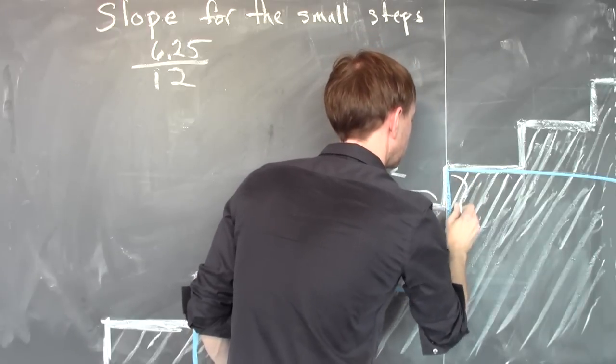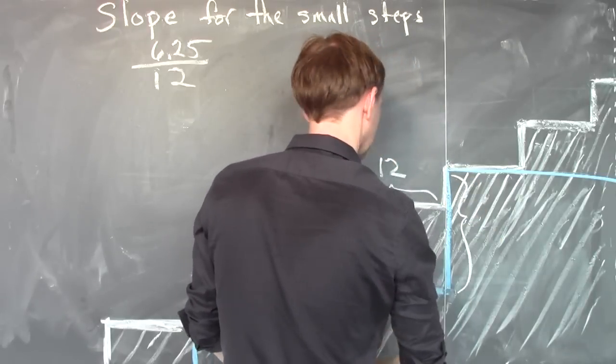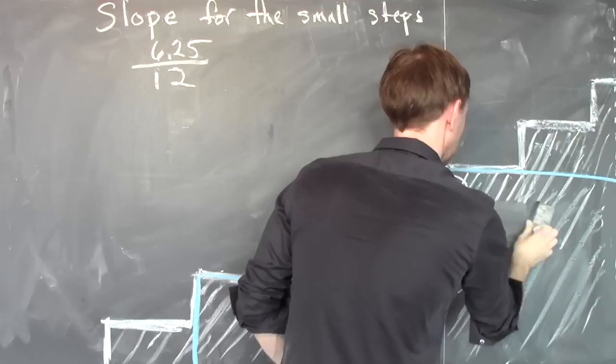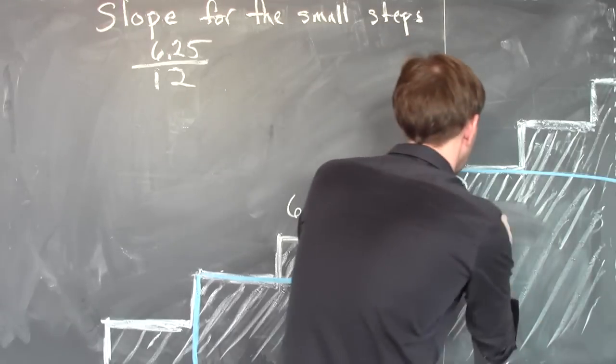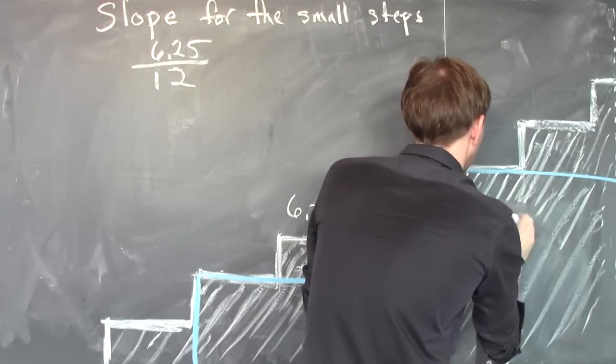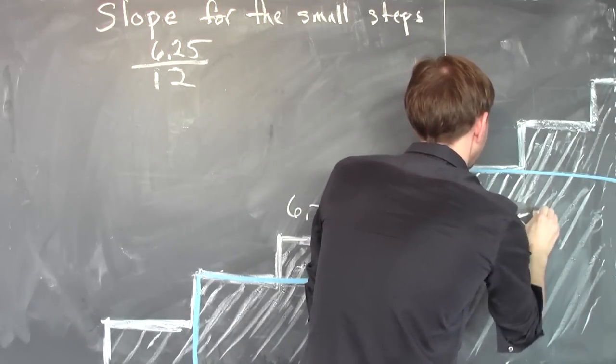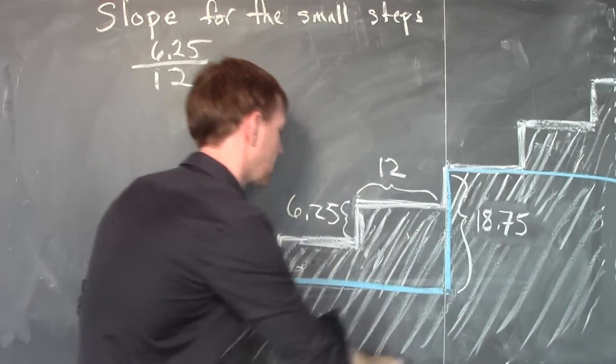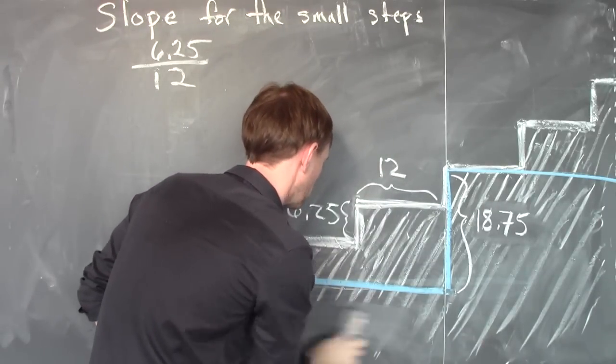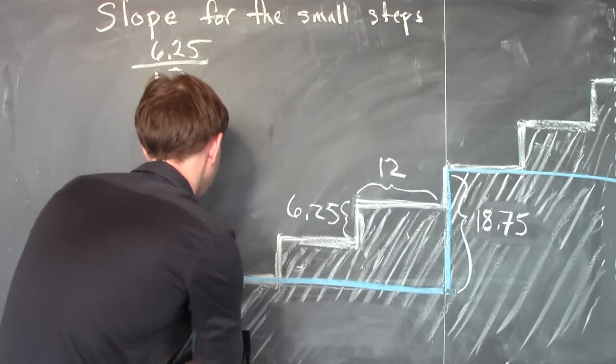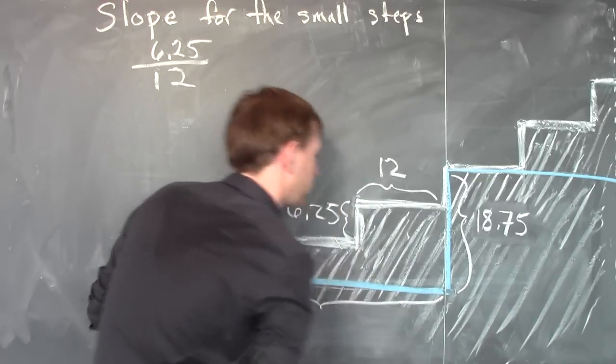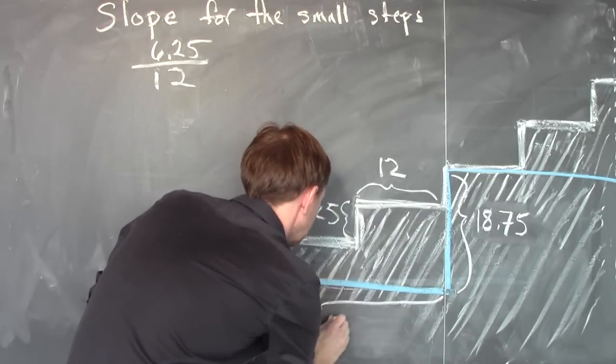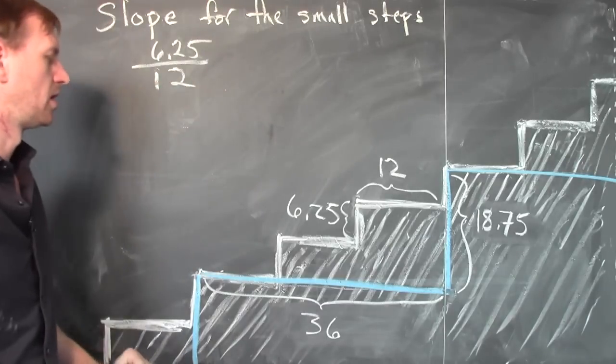The height of the large step was, it's right here, 18.75 inches. That's the height of the large step. And the width of the large step was 36 inches.